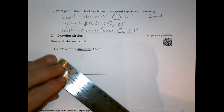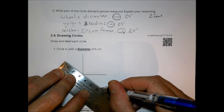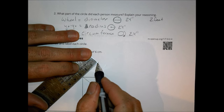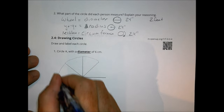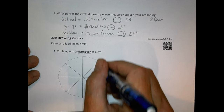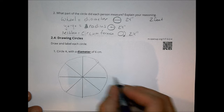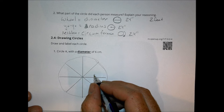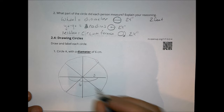I draw a couple more lines to have more dots to connect, then slightly sketch out what that circle might look like. There's my circle with a diameter of six centimeters. The diameter is six centimeters — that's the whole length — which means my radius is actually going to be three. The whole thing is six centimeters for circle A.